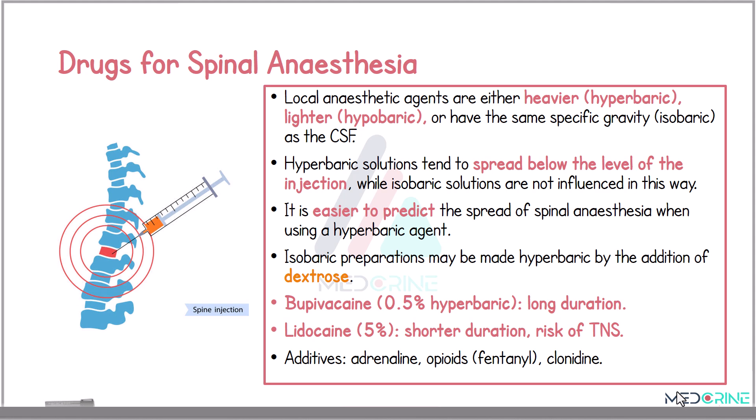A hyperbaric solution tends to spread below the level of the injection, while an isobaric solution is not influenced by the level of injection. Therefore, it is easier to predict the spread of spinal anesthesia when using a hyperbaric agent. Hyperbaric solutions, for example 0.5% bupivacaine, are more predictable and commonly used.